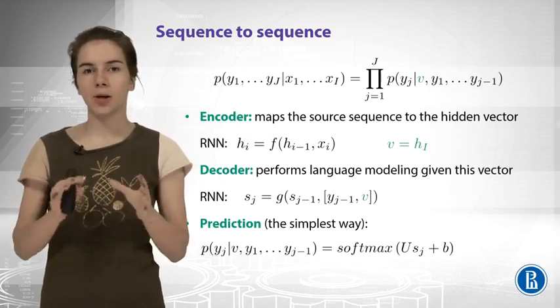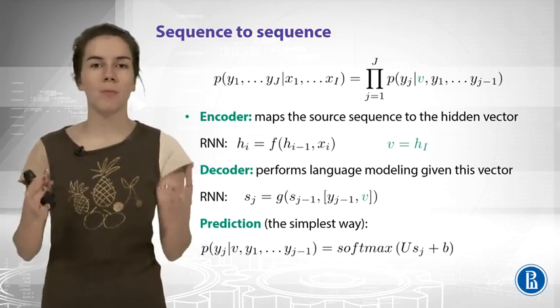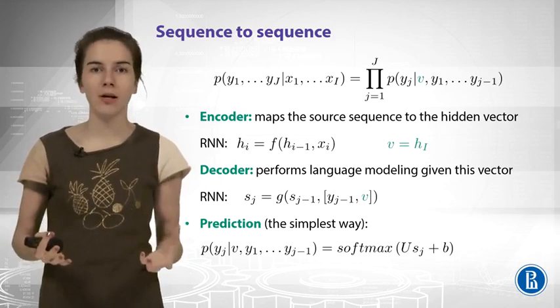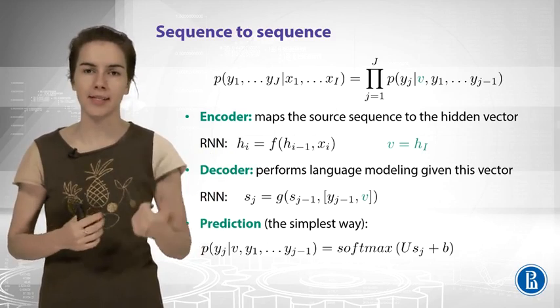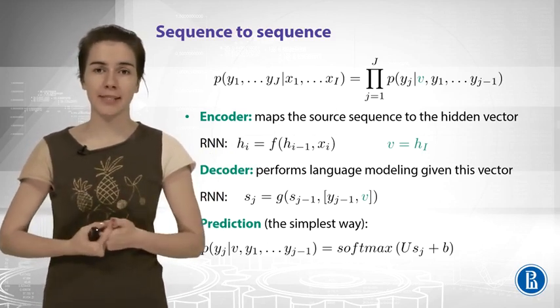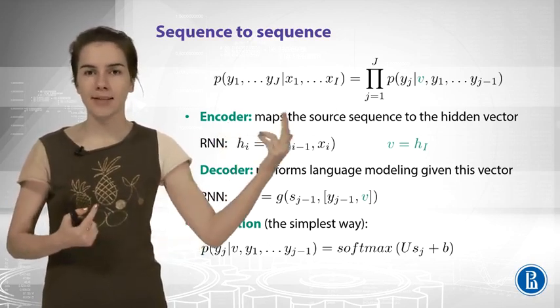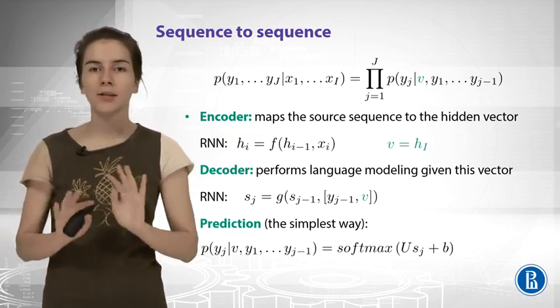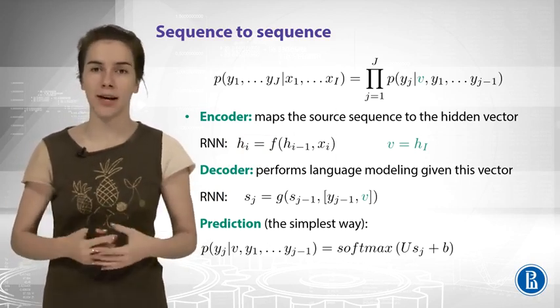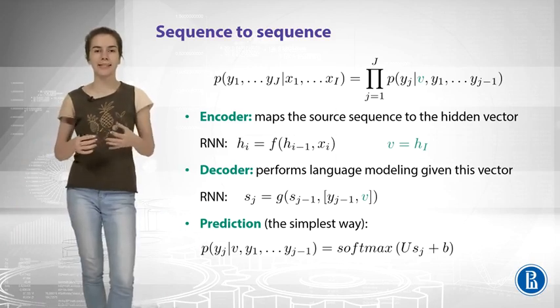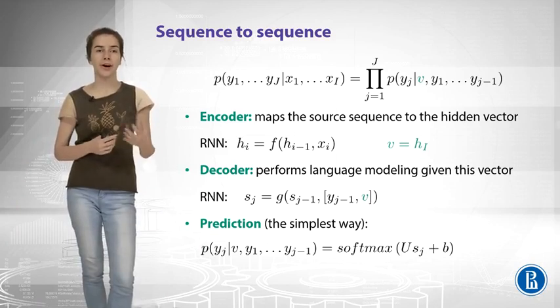Now, let us go into more details with the formulas. So you have your sequence modeling task, conditional, because you need to produce the probabilities of one sequence given another sequence, and you factorize it using the chain rule. Also, importantly, you say that X variables are not needed anymore because you have encoded them to the V vector. V vector is obtained as the last hidden state of the encoder, and encoder is just recurrent neural network.